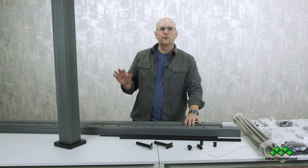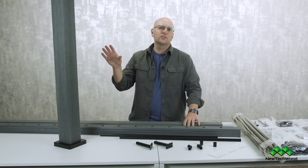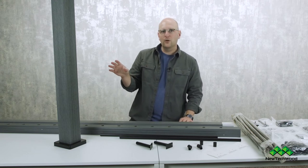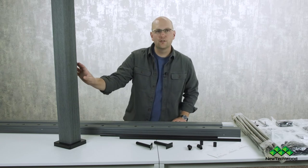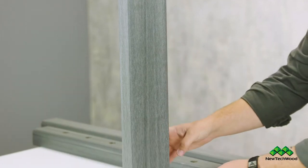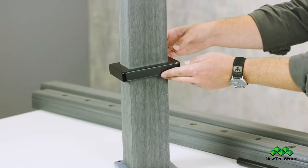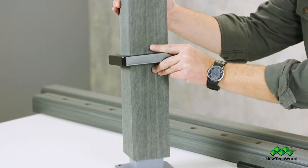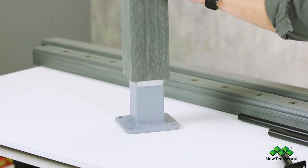All right so for your posts this consists of a few different things. So you have your outer composite sleeve that you see right here and then underneath that you've got a galvanized metal insert that gives you all the strength that you need.